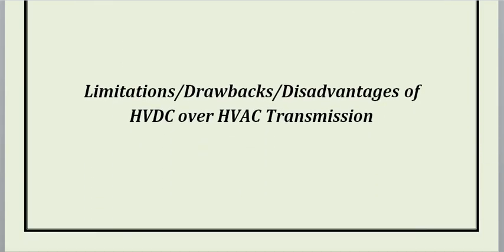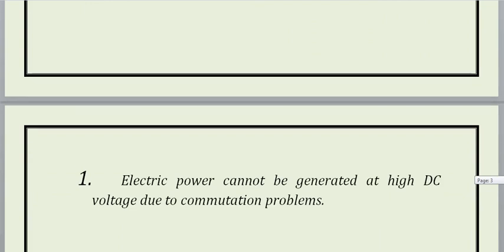Limitations and disadvantages of HVDC over HVAC transmission: First limitation — electrical power cannot be generated at high DC voltage due to commutation problems. Commutation problems की वजह से electrical power को high voltage DC पर generate नहीं किया जा सकता, but HVAC के case में alternating current को high voltage पर generate कर सकते हैं क्योंकि AC के case में कोई commutation problem exist नहीं करती.